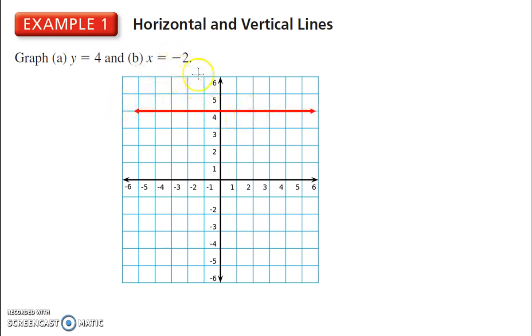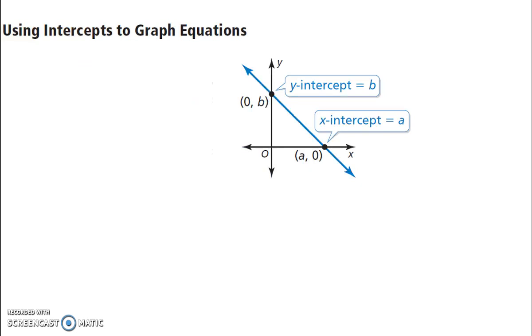X equals negative 2. So, on the x-axis, we go to negative 2, and x is always negative 2. Now, note that this is not a function. X equals negative 2 is not a function because it doesn't pass the vertical line test. But y equals 4, that is a function.